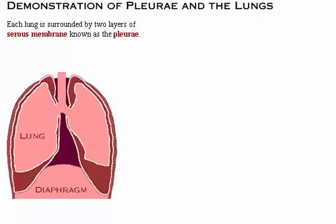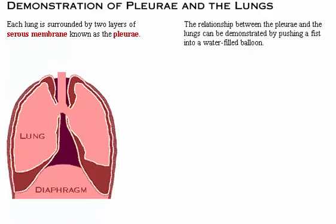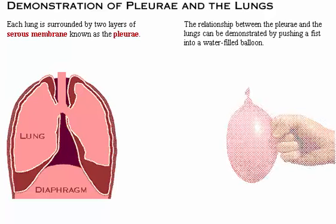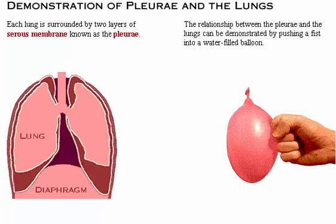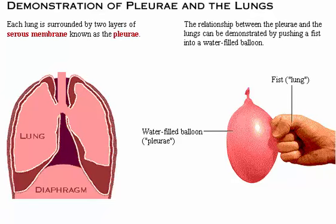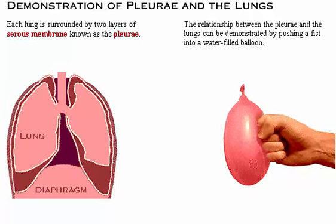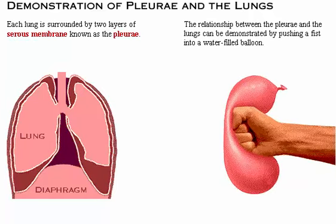Each lung is surrounded by two layers of serous membrane known as the pleura. The relationship between the pleura and the lungs can be demonstrated by pushing a fist into a water-filled balloon. The balloon represents the pleura and the fist represents the lung. As the fist pushes into the balloon, notice how the balloon wraps around it and the opposite surfaces of the balloon almost touch.